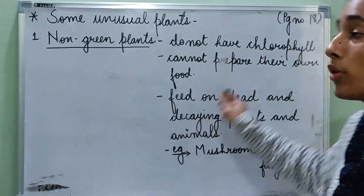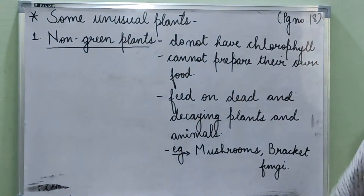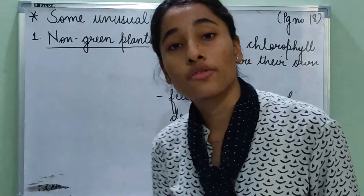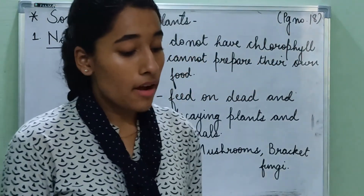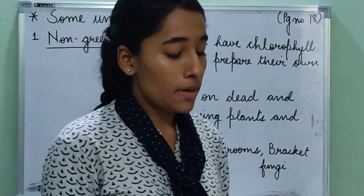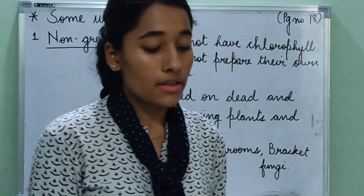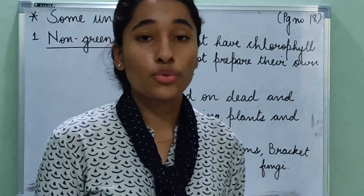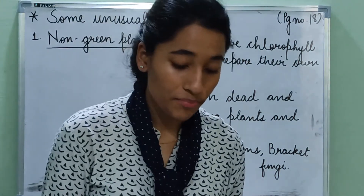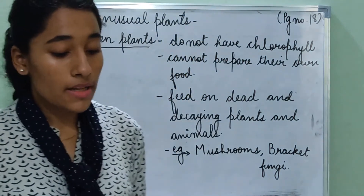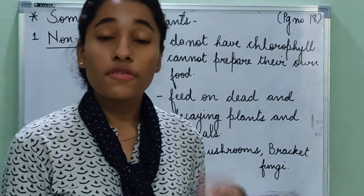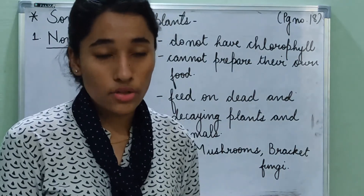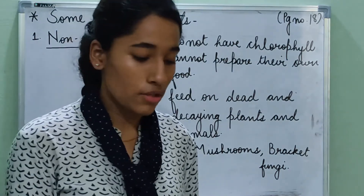We all have to open our books on page number 18. Now repeat after me: there are many other plants that are different from green plants because of their unusual features. Unusual plants are different from green plants because they have some unusual features.